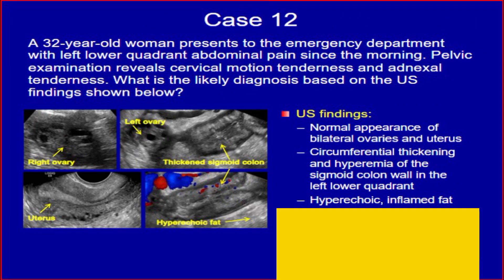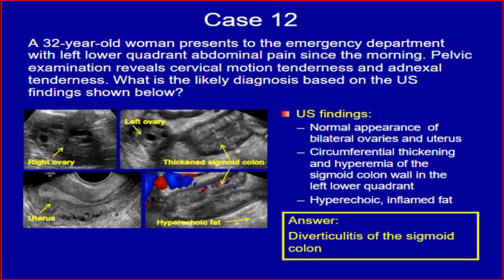Case 12. A 32-year-old woman presents to the emergency department with left lower quadrant abdominal pain since the morning. Pelvic examination reveals cervical motion tenderness and adnexal tenderness. What is the likely diagnosis based on the ultrasound findings shown? Ultrasound findings: normal appearance of bilateral ovaries and uterus, circumferential thickening and hyperemia of the sigmoid colon wall in the left lower quadrant, and hyperechoic inflamed fat. The answer is diverticulitis of the sigmoid colon.